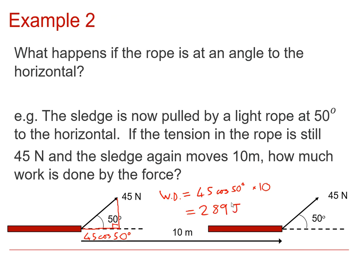So, just compare that, if you remember, with the previous example, where the work done was 450 joules. So, clearly what's happened is, even though the tension in that rope is the same, because it's not being pulled horizontally now, there's not actually as much work done when the sledge is moved through that distance with that same tension, because it's at an angle to the horizontal.